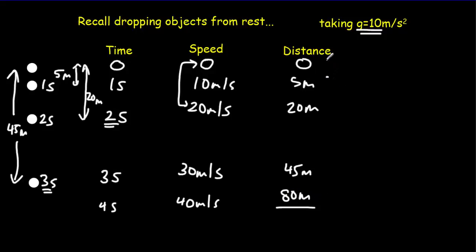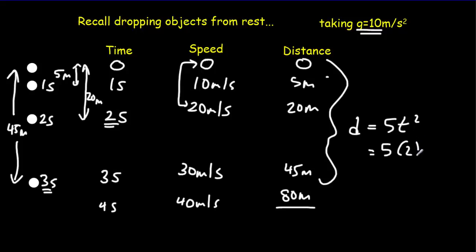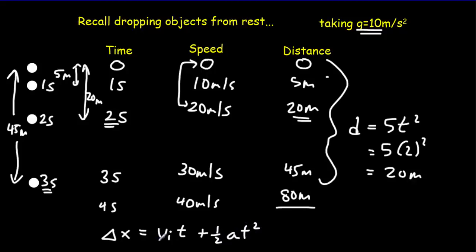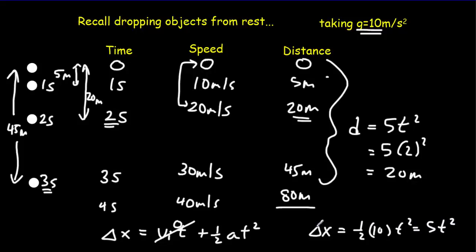You can check this yourself — these distances are equal to 5t². So if t equals 2, I get 5 times 4, which is 20 meters. You'll probably recall that from constant acceleration problems: displacement equals initial velocity times time plus ½at². If we're dropping from rest, initial speed is 0 and acceleration is 10, so we get Δx equals ½ times 10 times t², or 5t². So the distance falling from rest is given by 5t².